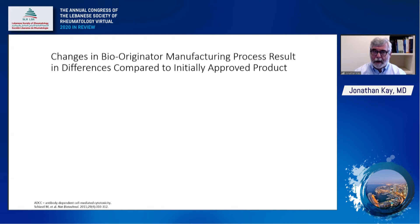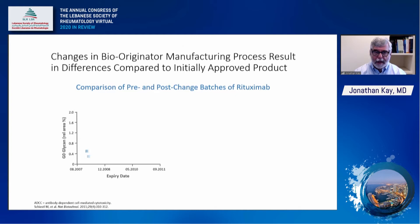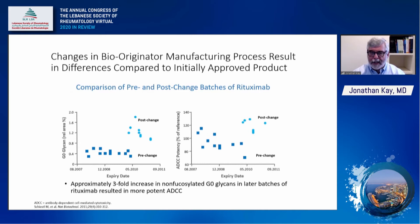Changes in biooriginator manufacturing processes may result in differences compared to the initially approved product. Comparing pre- and post-changed batches of rituximab, the G0 glycan content showed a threefold increase after the manufacturing change, with a functional change — an increase in antibody-dependent cell-mediated cytotoxicity potency of the reference product rituximab after this variation. Since these ranges fell within the proven acceptable range of variation, these products were released for commercial availability.